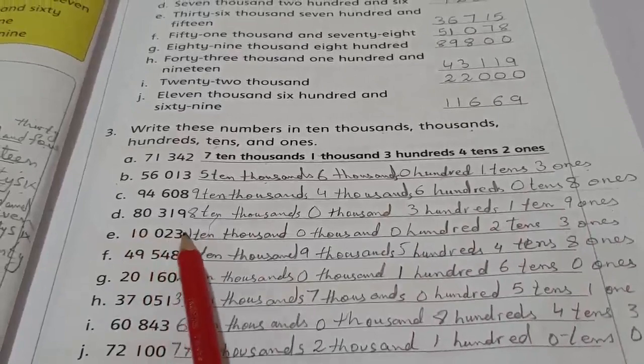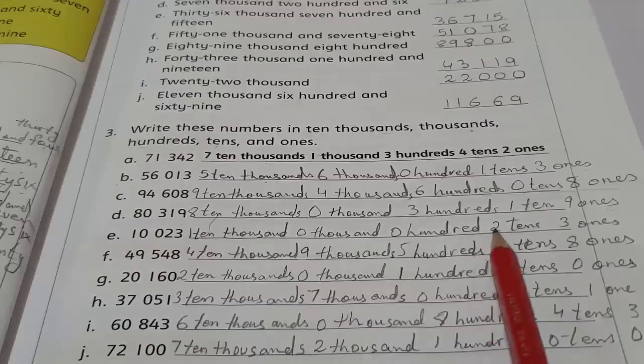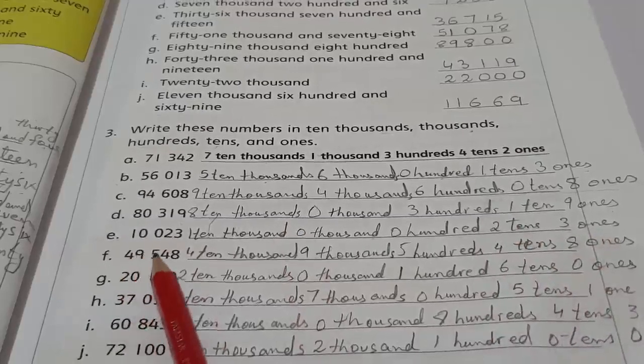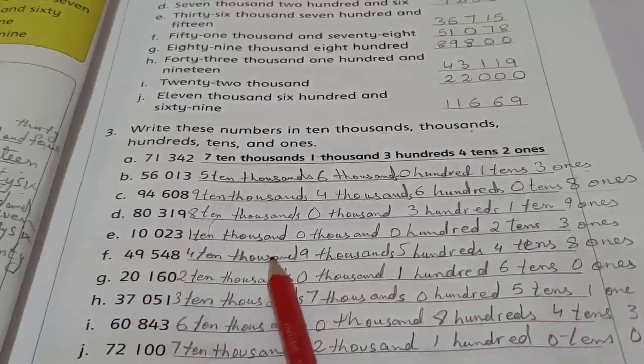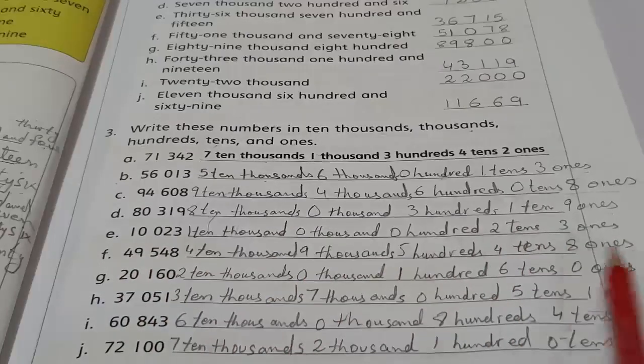E. 10023 - one ten thousand, zero thousands, zero hundreds, two tens, and three ones. F. 49548 - four ten thousands, nine thousands, five hundreds, four tens, and eight ones.